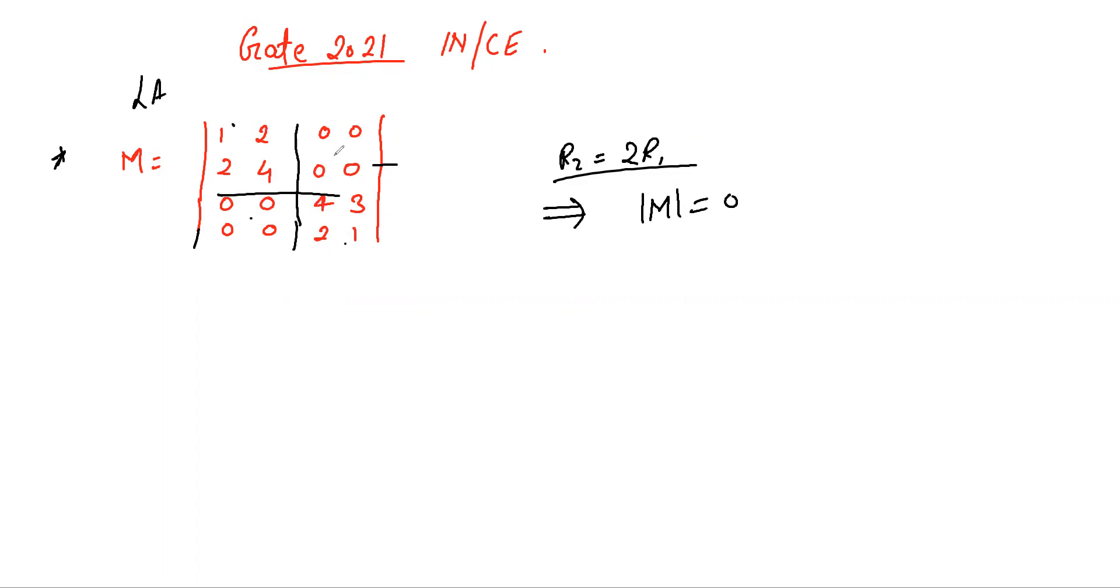minus determinant of this block times determinant of this block, which is 4 minus 4 times 4, 3 to the 6 and a 6 and a 0. 4 minus 4 is 0, so this is 0.